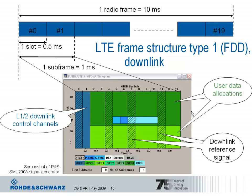The actual user data allocations are represented in green in this picture. In this example, two users share the available 10 MHz bandwidth. You can also see downlink reference signals at certain allocations, and in the first special subframe of a radio frame, there are also certain synchronization and broadcast channels.